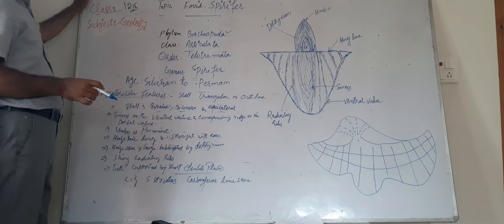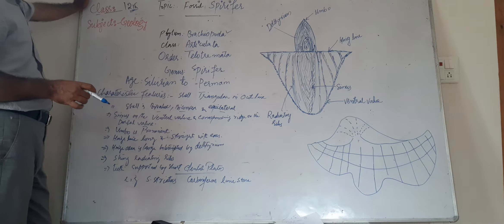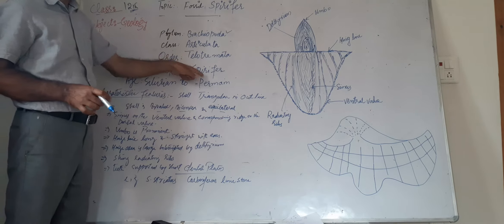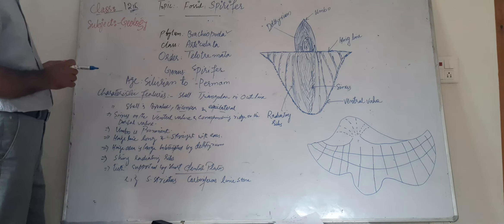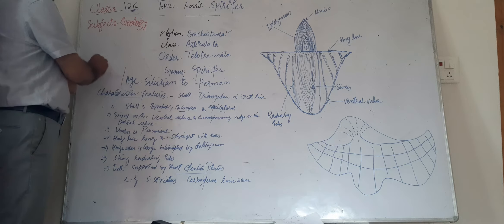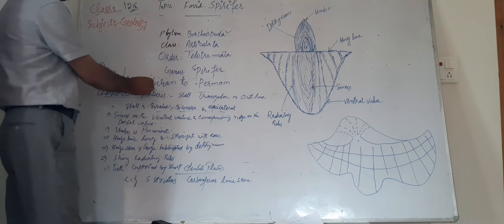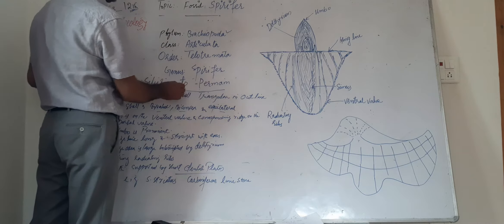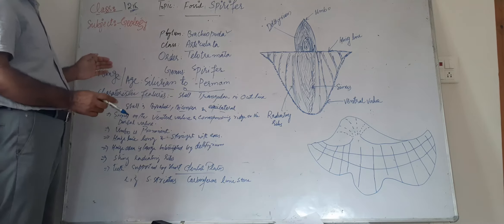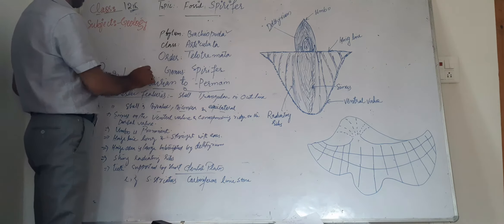Order is Tanoprimata and the genus whose description we are going to discuss is Spirifer. The age or range of this fossil Spirifer is Silurian to Permian.